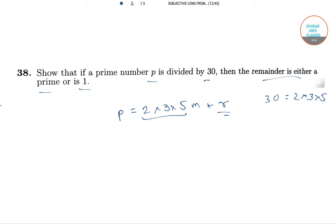This R should not be an integer which has 2, 3 or 5 as a factor, because if R has one of these as factor, then P will no longer be a prime number.